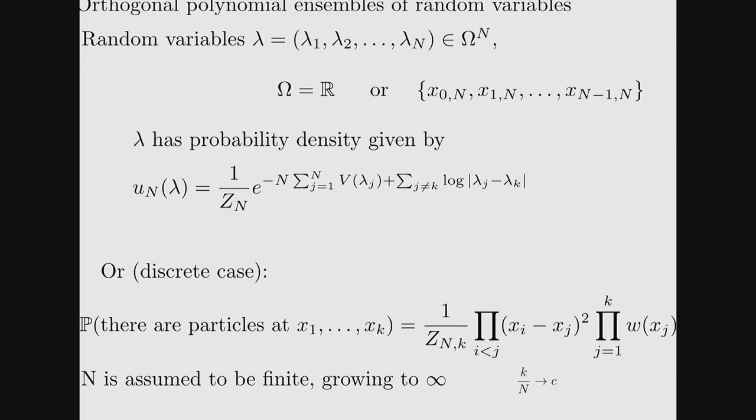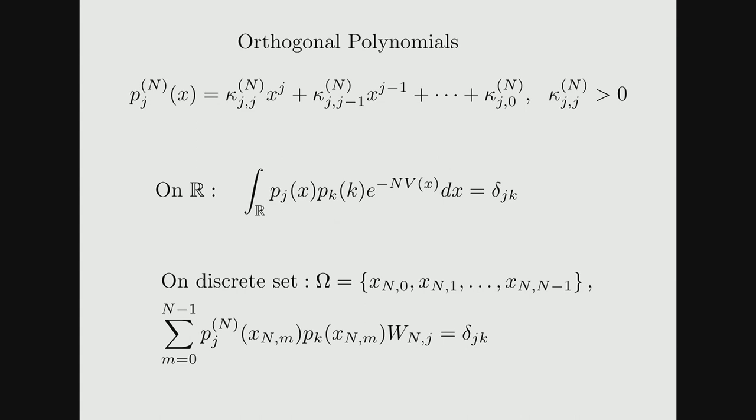The probability that there are particles at sites x_1 through x_k is given by this formula. N is growing to infinity, and the weights W_{N,m} — each node has a weight. If you have all of the weights at the nodes you can think of it as a function W of x where x lives on the nodes, and you find the j corresponding to x to define the weight function.